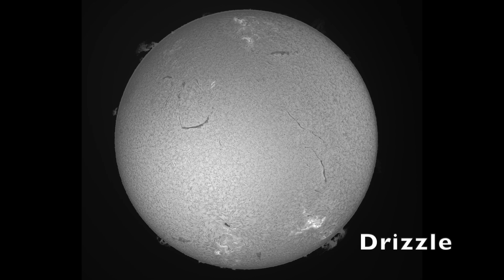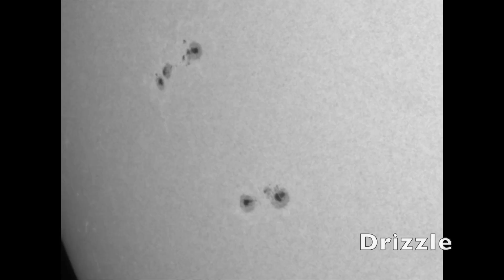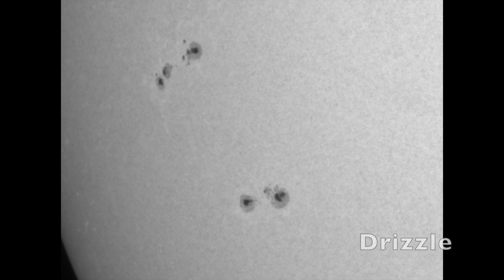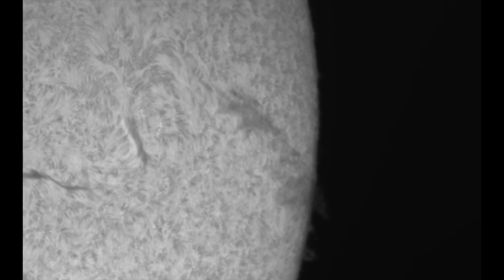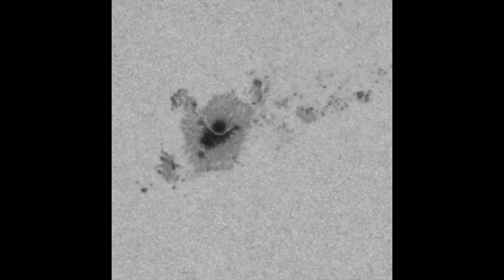I'm showing now multiple examples captured at focal ratios from f/7 to f/28 and under a wide variety of seeing conditions. In some there's very little difference, in others it's dramatic. I hope you can see why I recommend trying one image at each focal length with and without drizzle before you complete further processing steps.